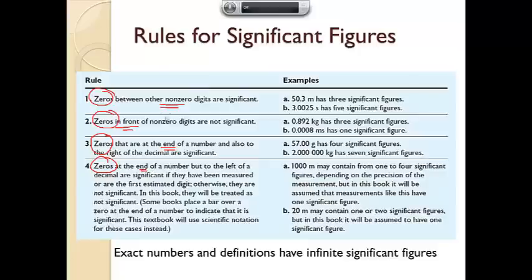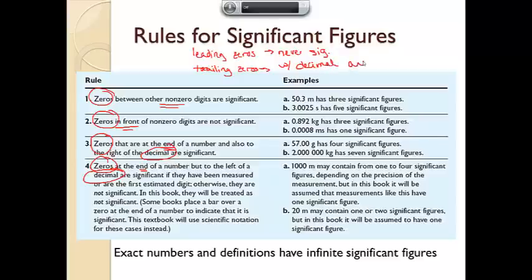I call the ones in front leading zeros. And they are never significant. And the one in the back trailing zeros. And those are actually all dependent on whether or not you see a decimal. If there is a decimal in the back and the zeros are in the back, they are significant. If there's no decimal and the zeros are in back, they're not significant.